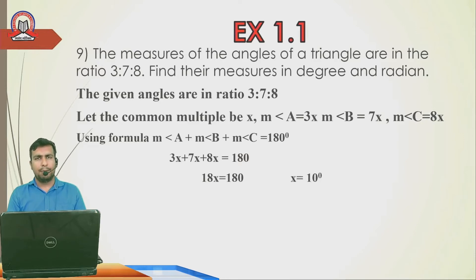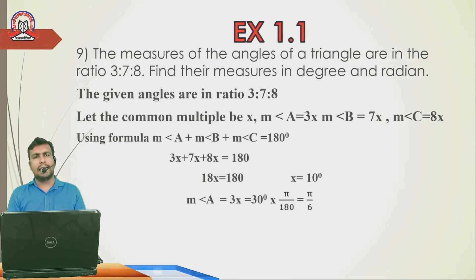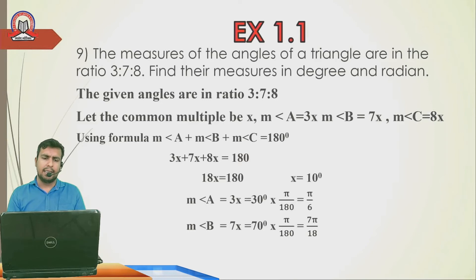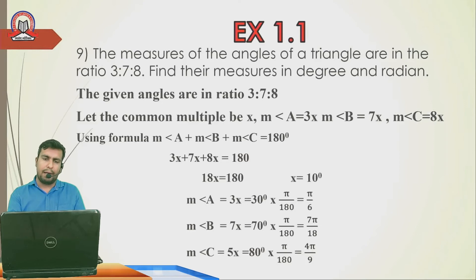Angle A = 3x = 30°; converting: 30 × π/180 = π/6 radian. Angle B = 7x = 70°; converting: 70 × π/180 = 7π/18 radian. Angle C = 8x = 80°; converting: 80 × π/180 = 4π/9 radian. That completes Question 8.